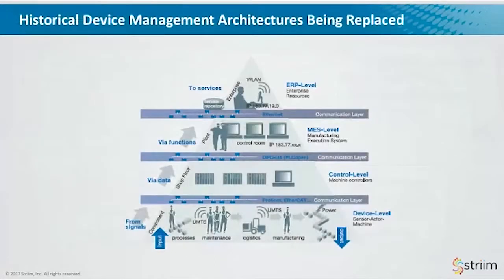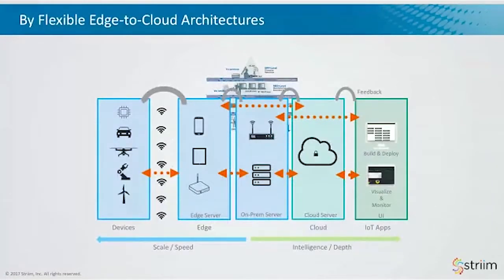If you think about manufacturing, there was a very hierarchical view — from individual sensors and devices, going through control levels and manufacturing execution systems, all the way through to ERP which managed the supply chain. That kind of rigid architecture with specific processing done in particular areas is being replaced with a more general architecture that has devices on one end and applications on the other, with processing, analytics, and storage happening wherever it makes sense.